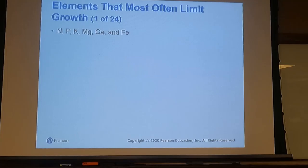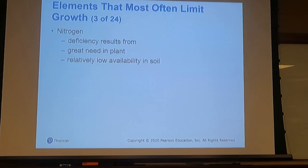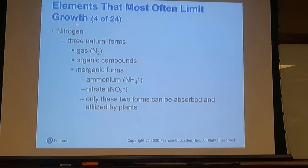The elements most likely to limit growth are nitrogen, phosphorus, potassium, magnesium, calcium, and iron — that's why we have N-P-K fertilizers, technically N, P₂O₅, and K₂O, which undergo transformations to provide P and K to the plant. Nitrogen is in proteins and DNA and all metabolic processes, and it has the greatest deficiency risk because atmospheric nitrogen cannot diffuse into the soil in a plant-available form.